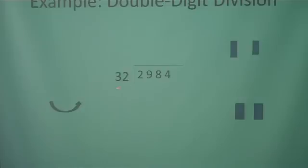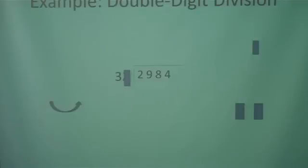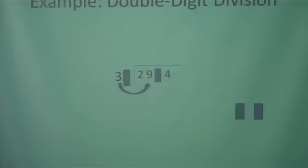We're going to start with the question: can 32 go into 2? No. Can 32 go into 29? No. How many times can 32 go into 298? Since we're trying to guess how many times 32 can go into 298, we're going to use the cover technique to estimate. We're going to cover the 2 and cover the 8, and ask how many times can 3 go into 29 without going over. That's going to be 9, so we're going to try 9.